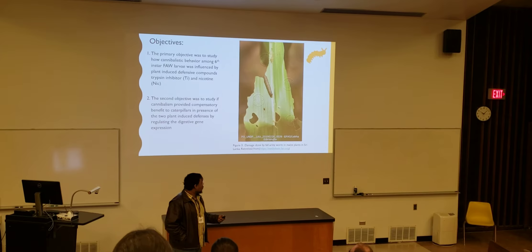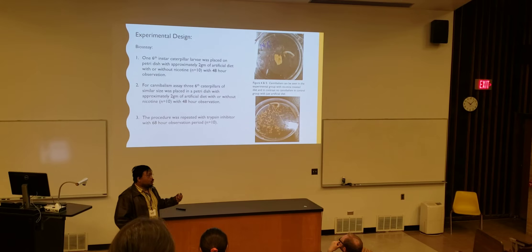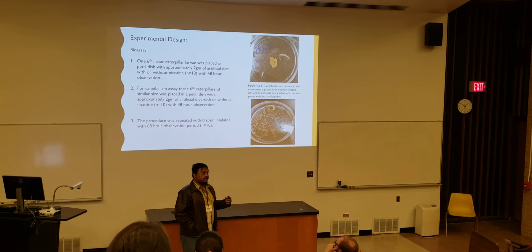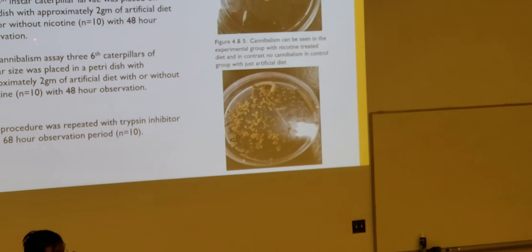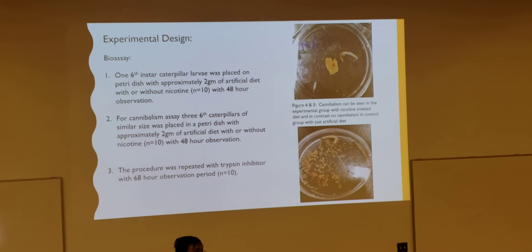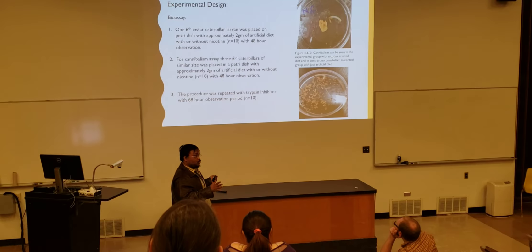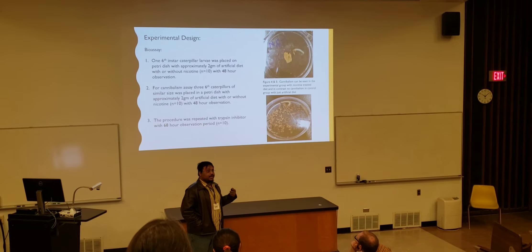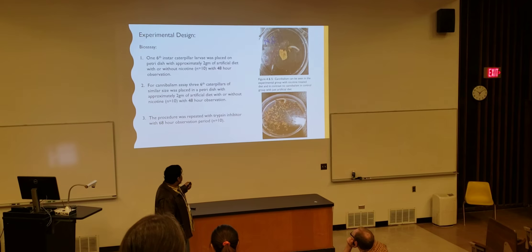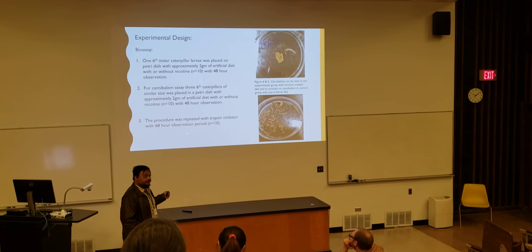So we designed an experiment with four groups. The first group has a single caterpillar with artificial diet and no toxins — that was our optimal diet control group. The second group has a single caterpillar with nicotine, to see what nicotine does to the caterpillar when there is no cannibalism. The third and fourth groups are the cannibalism groups: three caterpillars of similar size, with or without toxin. Each group had multiple replicates. We gave them a 48-hour observation period, and repeated the same design with trypsin inhibitor, only with a longer observation period.